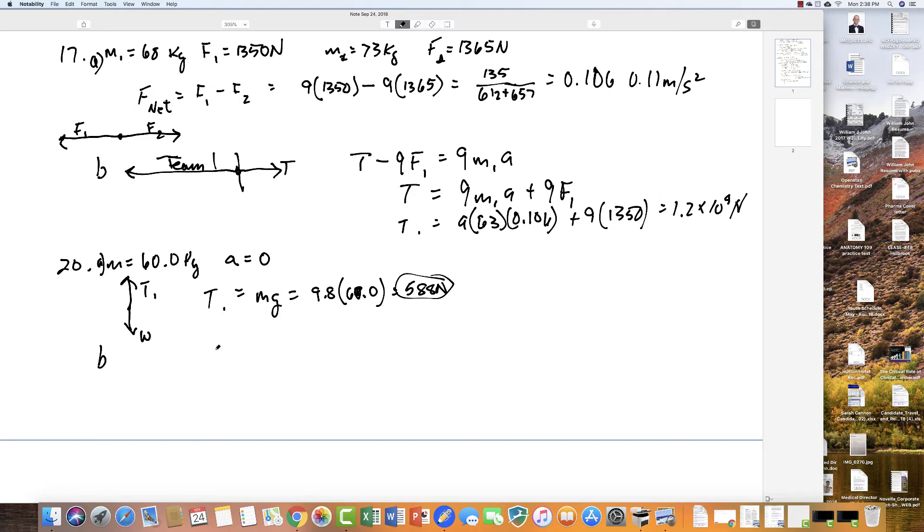Now the second part says that now the acceleration, they're changing the acceleration to 1.5 meters per second squared. So tension is now going to be equal to his weight plus the force required to give him that acceleration. So the tension is going to equal this weight, 588, we already calculated, plus his mass times this acceleration of 1.50. You do that calculation and you get 678 newtons. Now the key difference here is the first one, constant speed, no acceleration. The second one, you have an acceleration of 1.5.